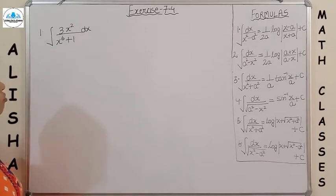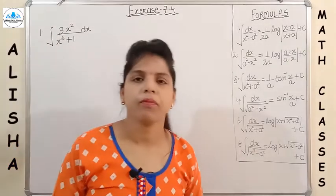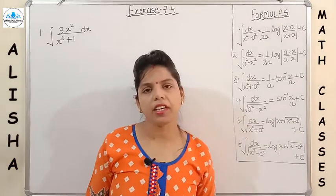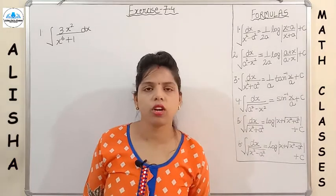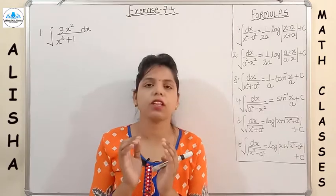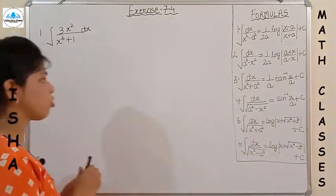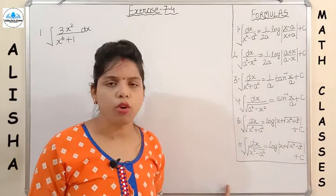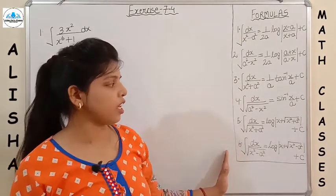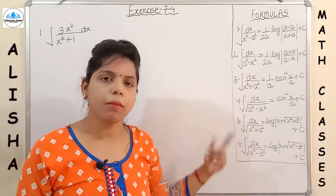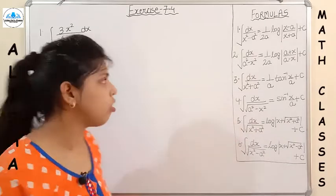Question 1: integration of 3x² upon (x⁶ + 1). First of all, always make the denominator in the form of x² + a² or x² − a², meaning you have to make the power a square so you can apply the formulas. I have written all six formulas — the six particular types of integrals whose derivations I discussed in my previous video.